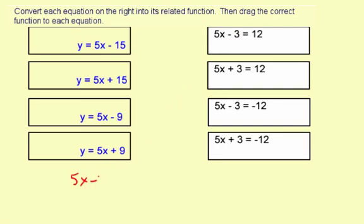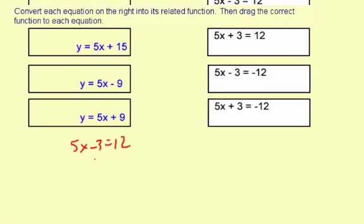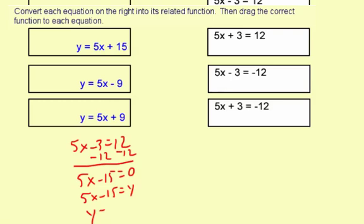So start with 5x minus 3 equals 12. What you want to do is subtract 12 from both sides. So you get 5x minus 15 equals 0. And then to create the related function you're going to replace this 0 with a y. So it's going to be 5x minus 15 equals y. And to put it in proper form you put the y on the left. So y equals 5x minus 15.